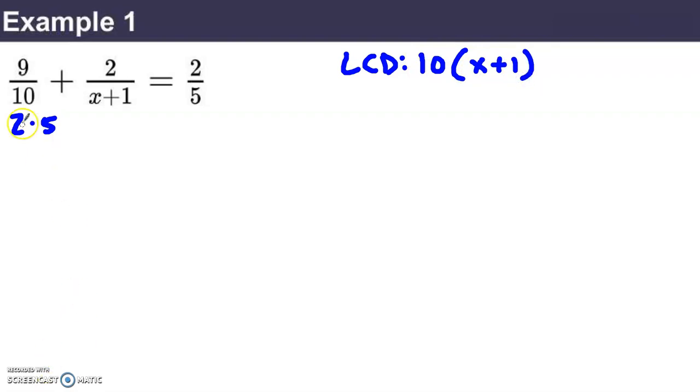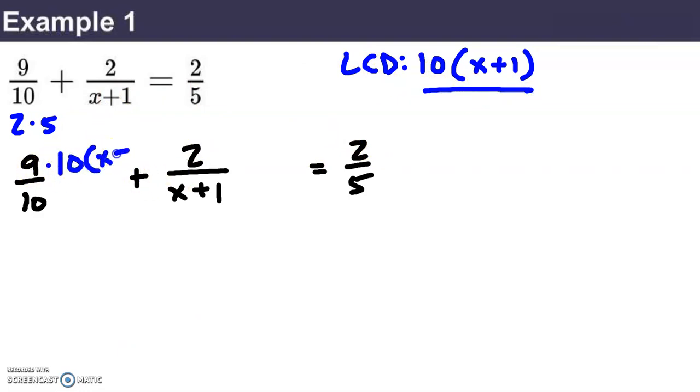What I'm going to do is I'm going to take that equation that we were given, the 9 tenths plus 2 over x plus 1 equals 2 fifths. And I'm going to multiply every term on both sides of the equation by that least common denominator. So, I'm going to take the 9 tenths times 10 times x plus 1. I'll take the 2 over x plus 1 times 10 times x plus 1. And I'll take 2 fifths times 10 over x plus 1.